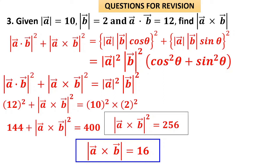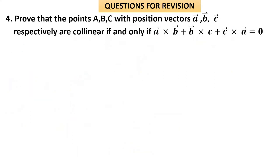Alternatively, this problem can be solved by first finding cosθ from a·b = |a||b|cosθ, then computing sinθ, and substituting into |a × b| = |a||b|sinθ. Both approaches yield the same result.